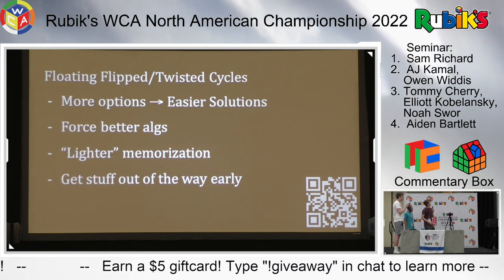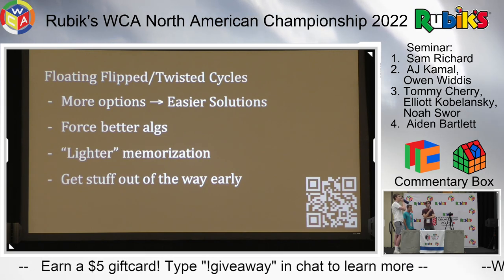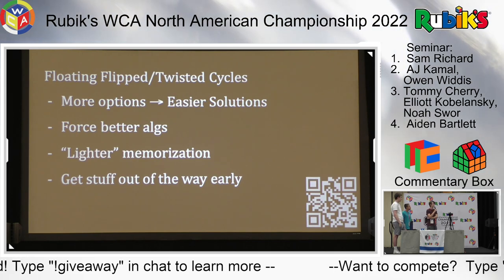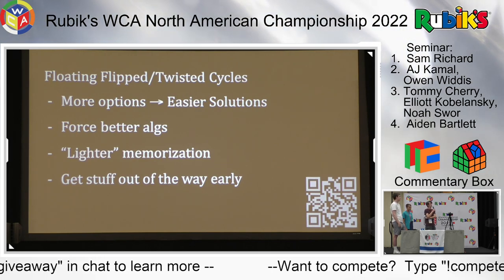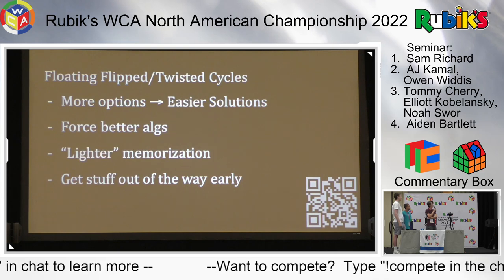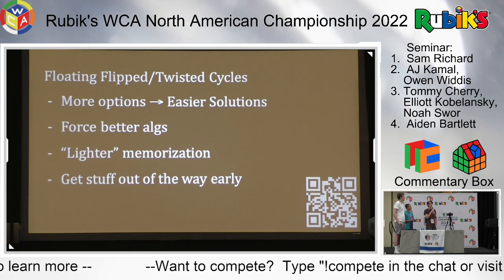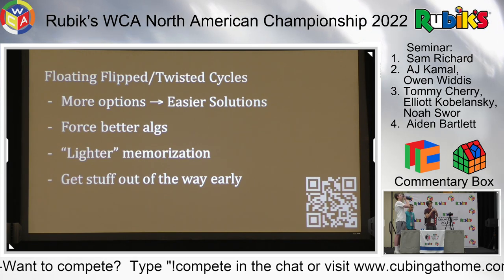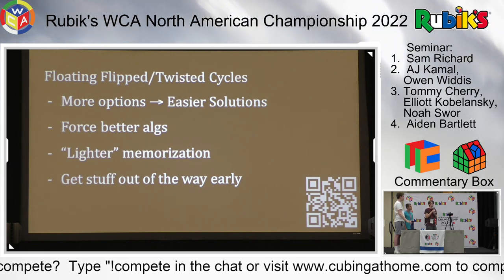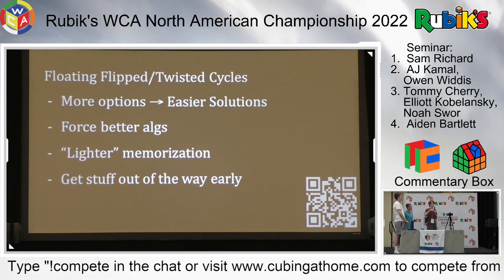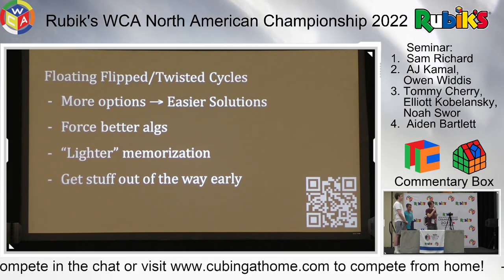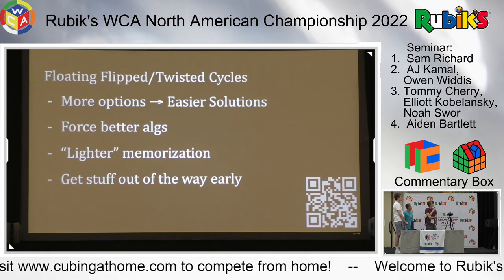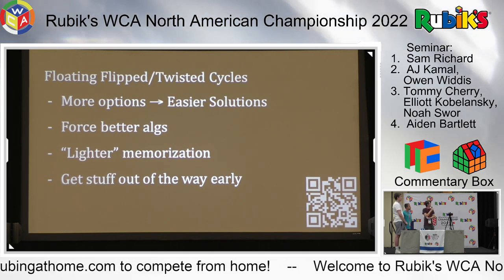Floating is normally done when your buffer is solved, but you can also do it when your buffer is flipped. For example, if you see another piece on the cube that's flipped and your buffer is also flipped, you can start floating. During execution, just do the two-flip algorithm involving your main buffer and then do the rest of the solve from a different buffer - although you can also do it when only the one piece, your buffer, is flipped.